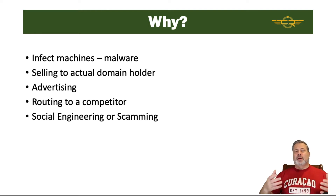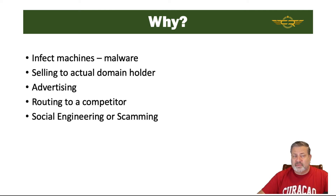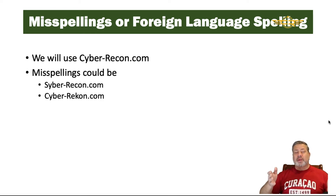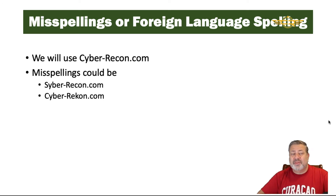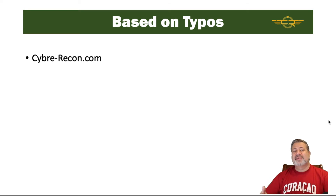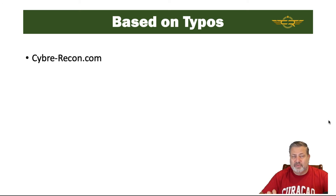So what do these typosquatting schemes actually look like? First, there are misspellings or foreign language spellings. Using cyberrecon.com as our example, maybe people think it starts with S-Y-B-E-R, or spell recon as R-E-K-O-N. Those might not be strange at all if you're coming from a foreign country. There are also typos — for instance, typing C-Y-B-R-E instead of C-Y-B-E-R. That's just a transposition of two letters that someone might easily make.